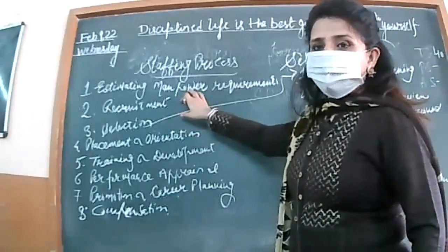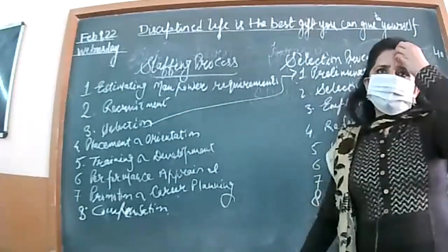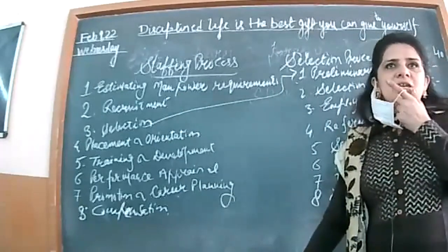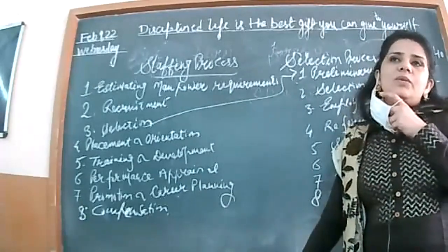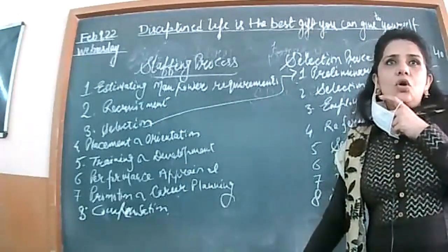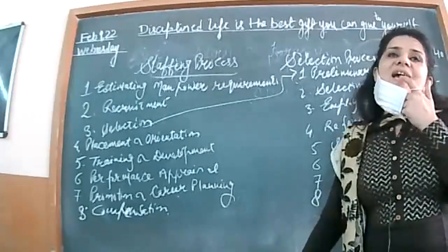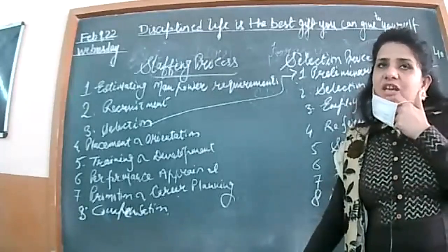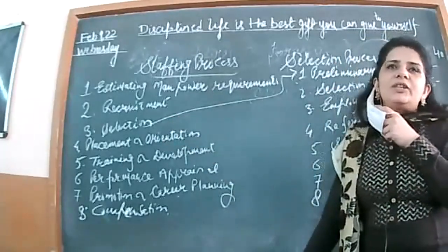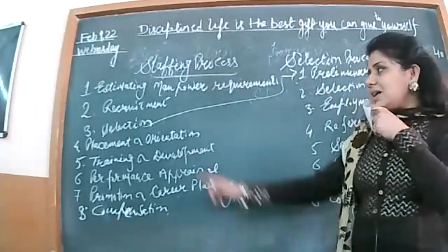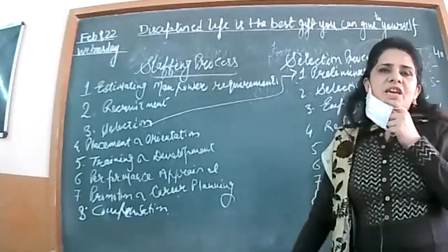Recruitment is always being called a positive process. Selection we call always a negative process. Why? Because in recruitment we just invite persons to apply for the vacant position in our company. We offer jobs to them, so the degree of rejection is less. We invite more people to apply so that I have a wider choice and will be able to select the best one.